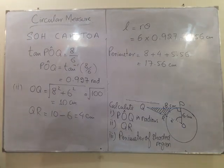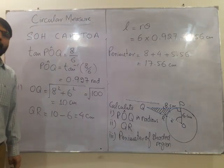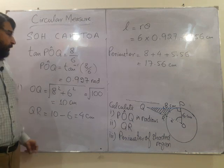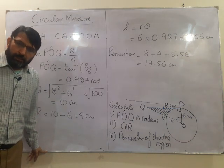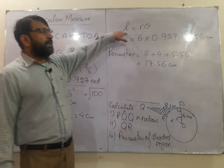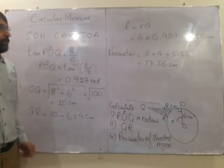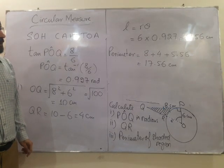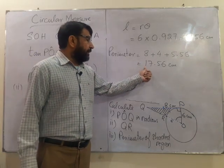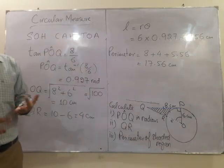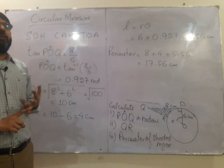In this way we can use trigonometry, we can use Pythagoras theorem and we can use circle properties and the arc length and area of sector formulas to find out the value of the arc length, value of the perimeter, value of the area of a sector.